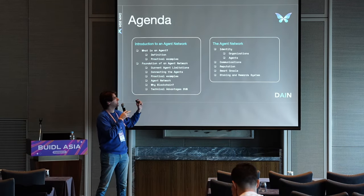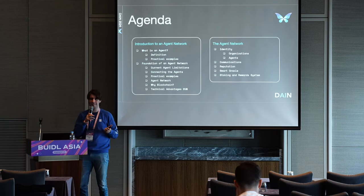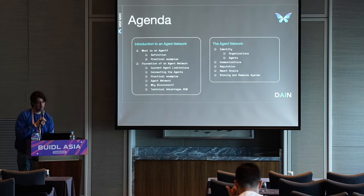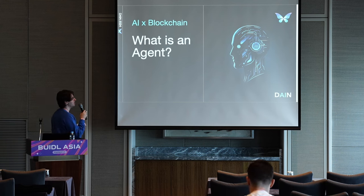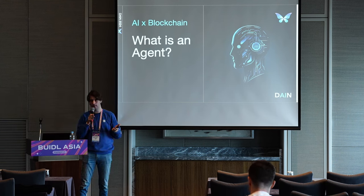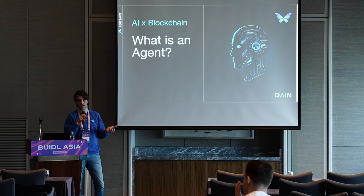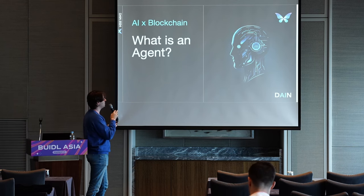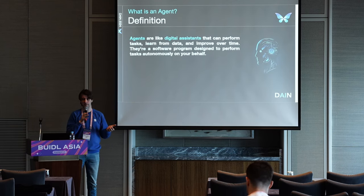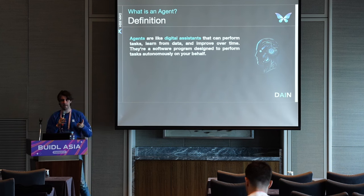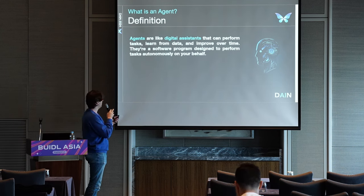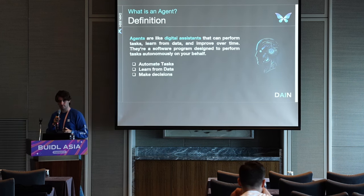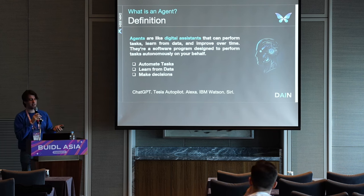And of course, thank you all for being here. Pretty nice to be in Korea. So let's get started. Basic thing: what's actually an agent? Most of you have probably interacted with some agent, such as GPT — that's an agent using OpenAI GPT-4 most of the time. Simply defined, agents can be like digital assistants. They can perform tasks, learn from data, and they can be autonomous. Basically, they do automated tasks, learn from data, and make decisions. Some more examples: ChatGPT, Tesla, Alexa, or Siri.